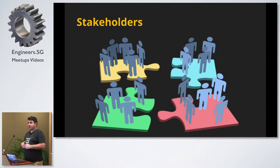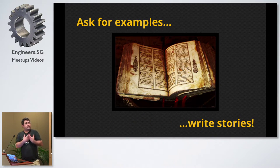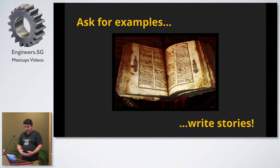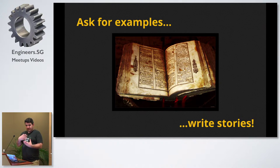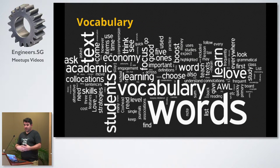The best way to get stakeholders involved is to bring them to all discussions developers have. Find the person most interested in the project and involve them as much as you can. When you talk to the stakeholder, ask them to describe — using examples — how the system should behave. Ask them to describe using simple stories how they want the system to work. By engaging the stakeholder in doing so, they will start using the language you want to use as well. You start building a vocabulary of the same words.